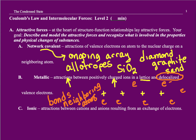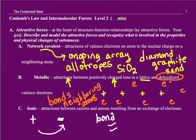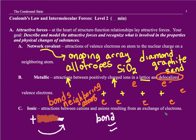Ionic — this should be a little bit more familiar to you. Ionic is the attraction between cations and anions. It's a bond between neighboring atoms. In this case, there's been an exchange of electrons and then an attraction between those.